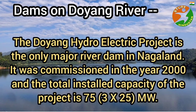Dams on Doyang river: the Doyang hydroelectric project is the only major river dam in Nagaland. It was commissioned in the year 2000 and the total installed capacity of the project is 75 megawatts.